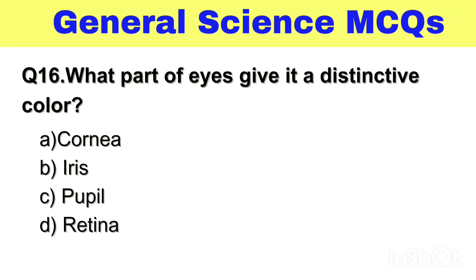Question No. 16. What part of the eye gives it a distinctive color? Option A. Cornea, B. Iris, C. Pupil, D. Retina. The right answer, Option B. Iris.